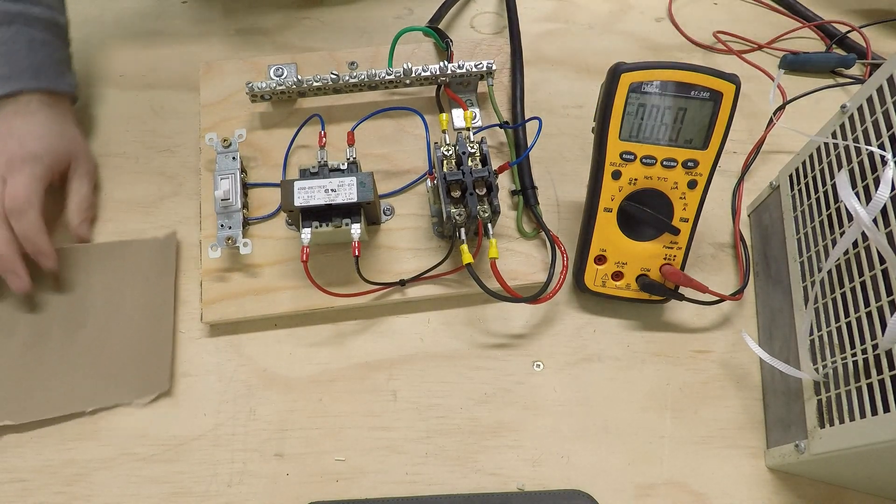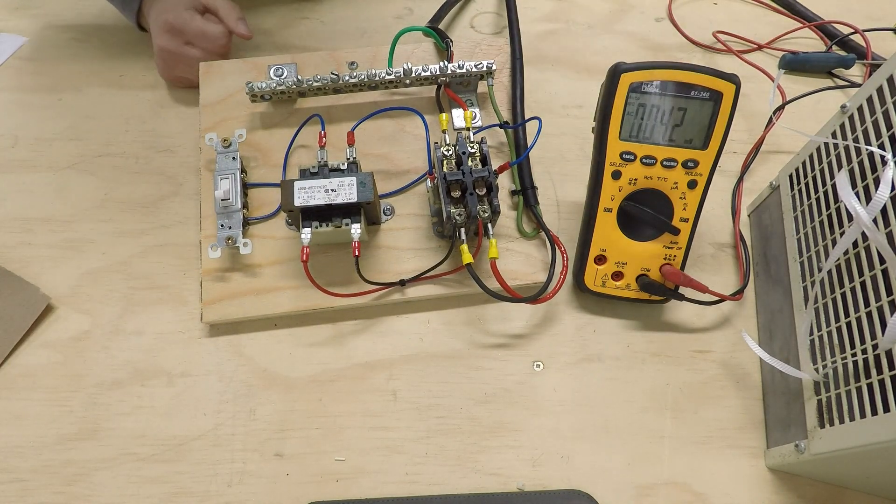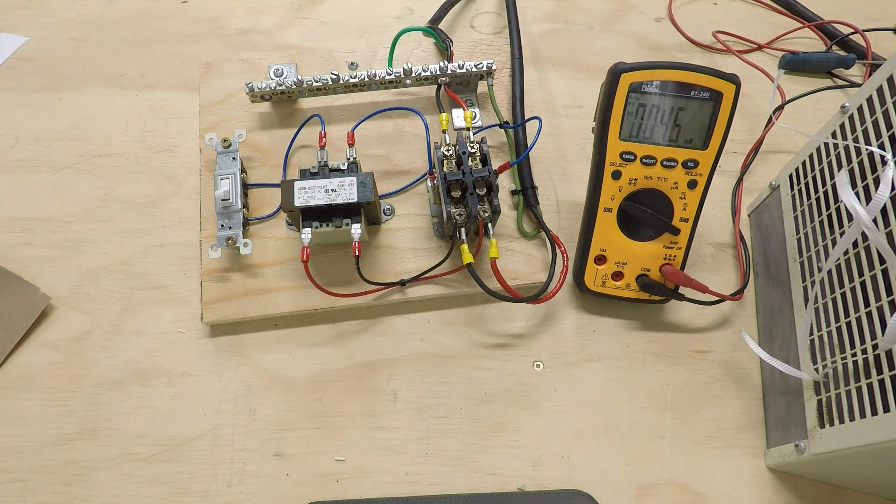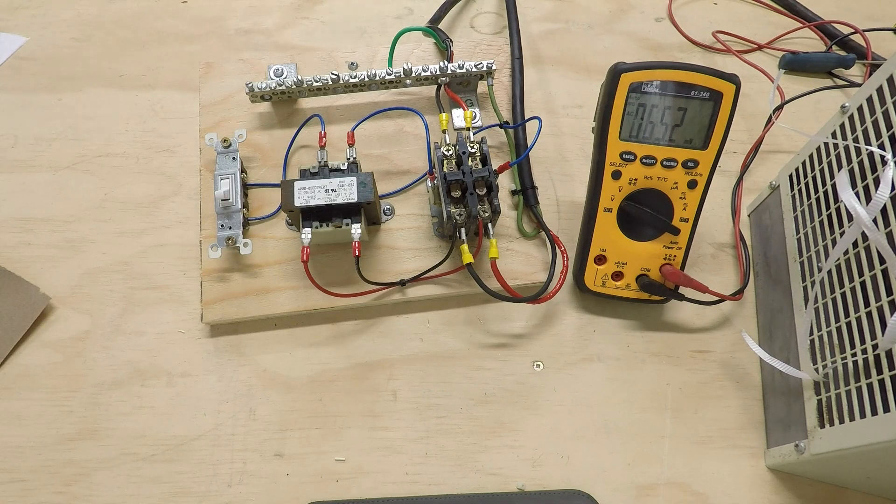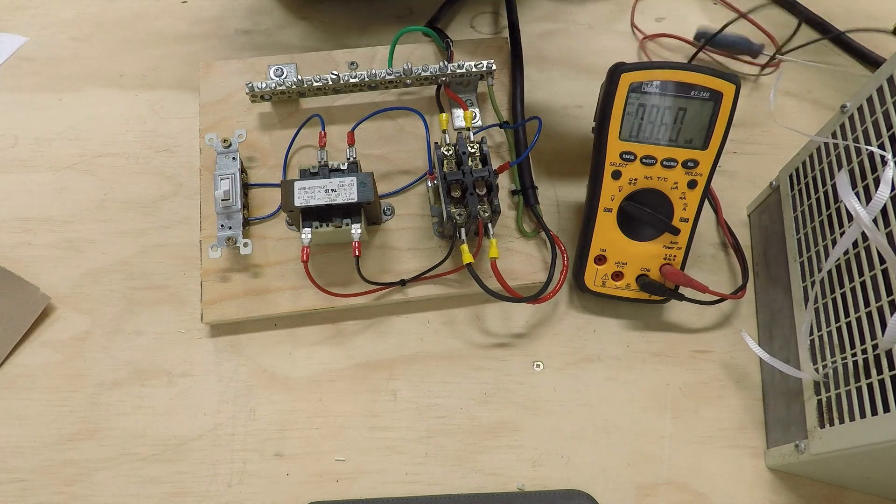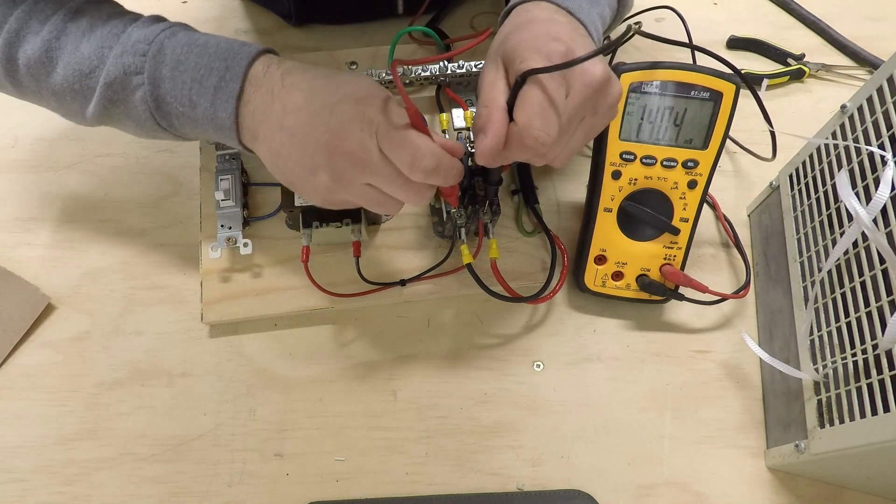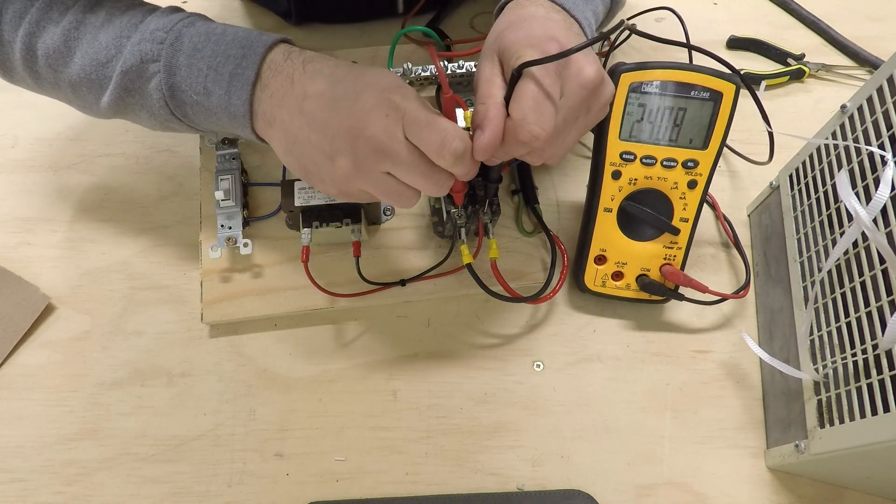So now that we've got it sanded up, my fan should turn on when I turn the breaker back on, or after I switch the switch. So I've got the breaker on now, and just to confirm, let's take a voltage measurement from phase to phase, and we've got 240 volts.